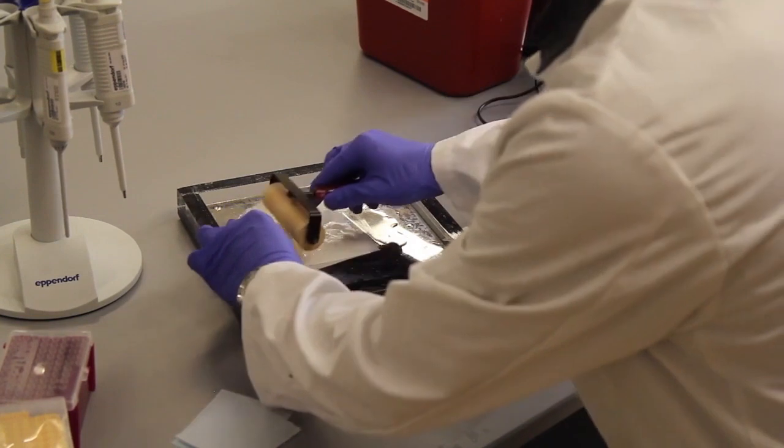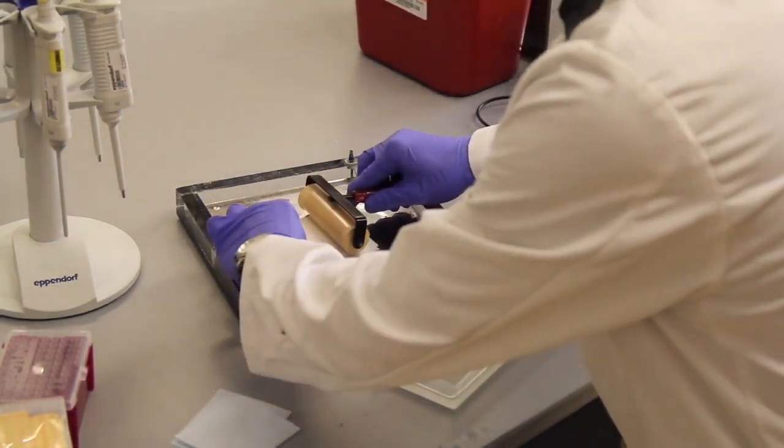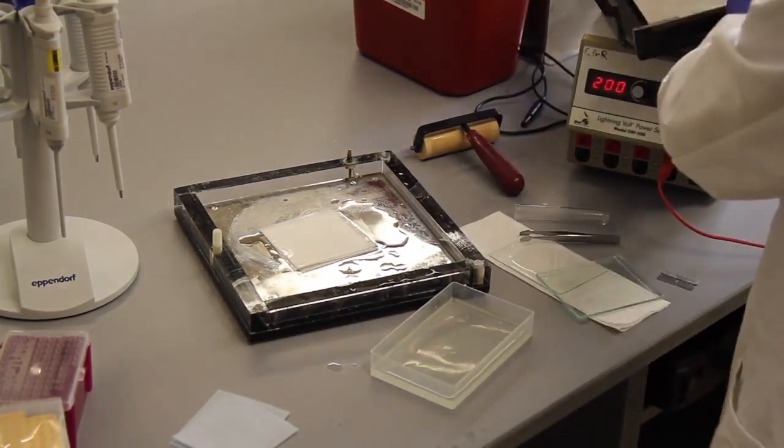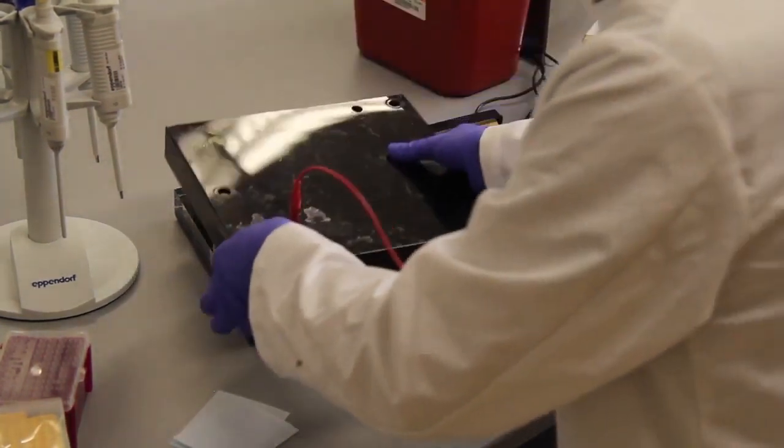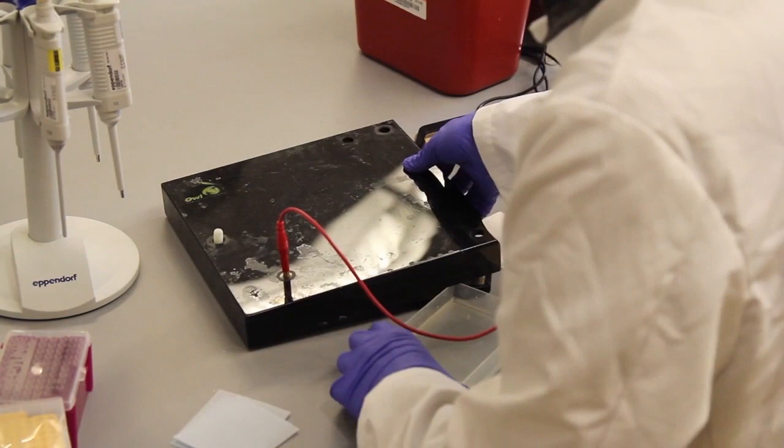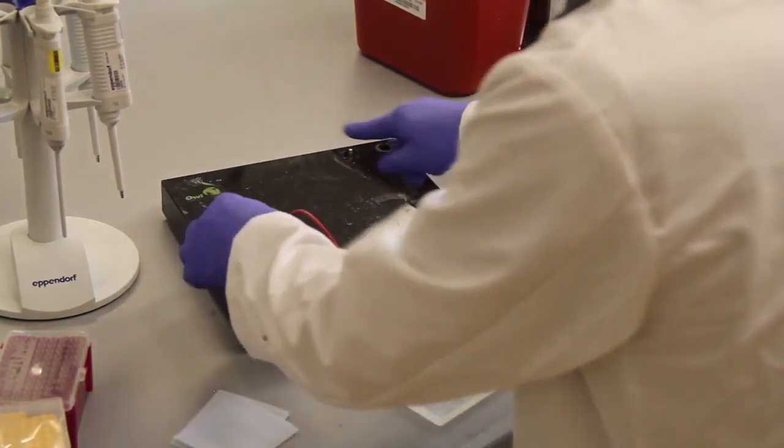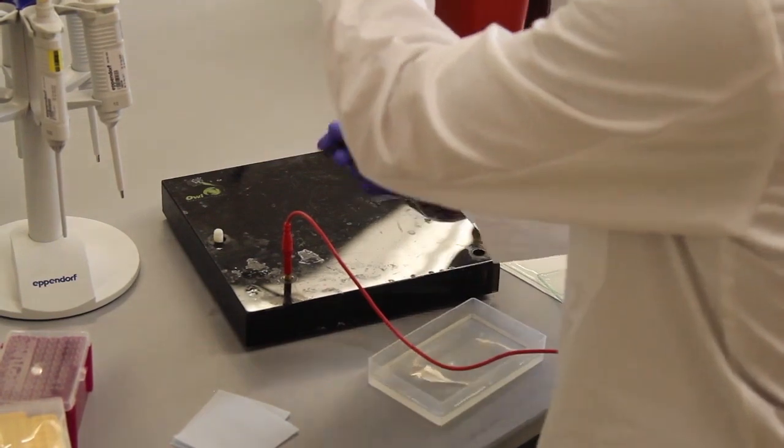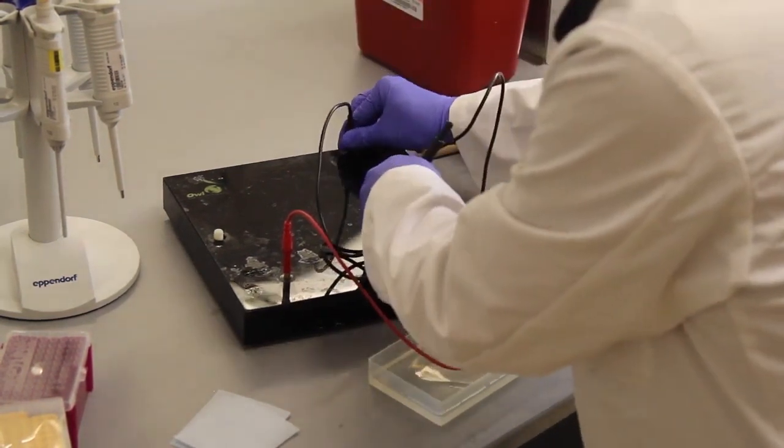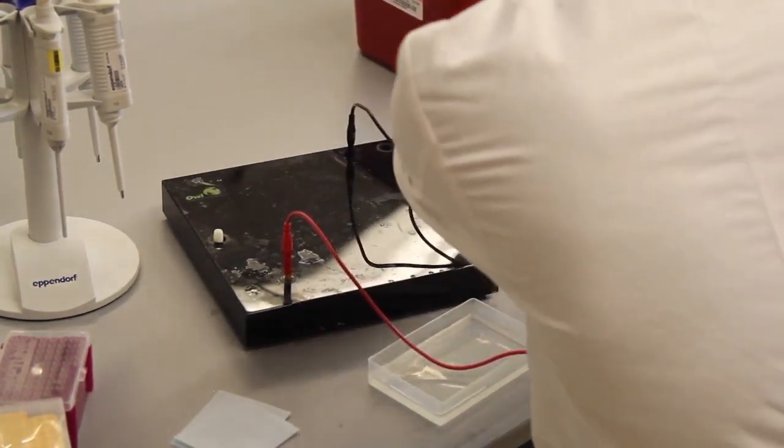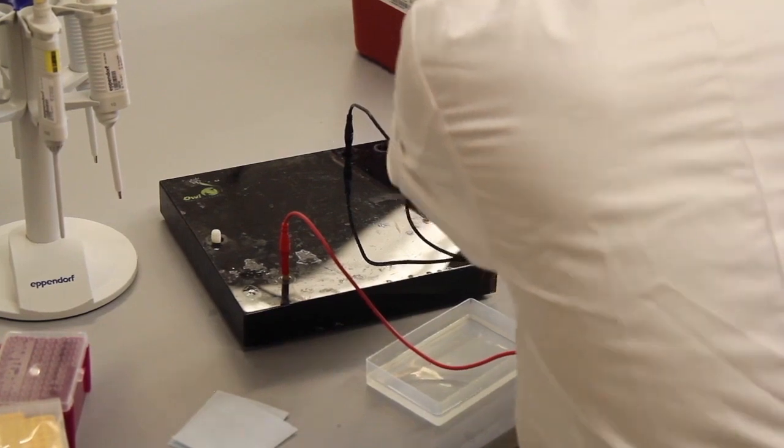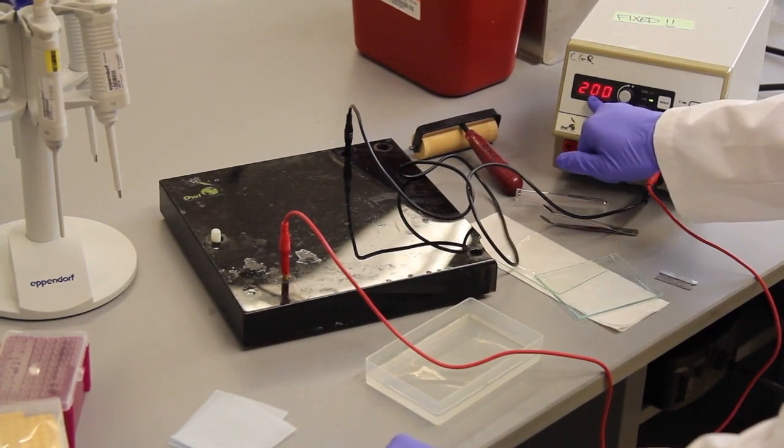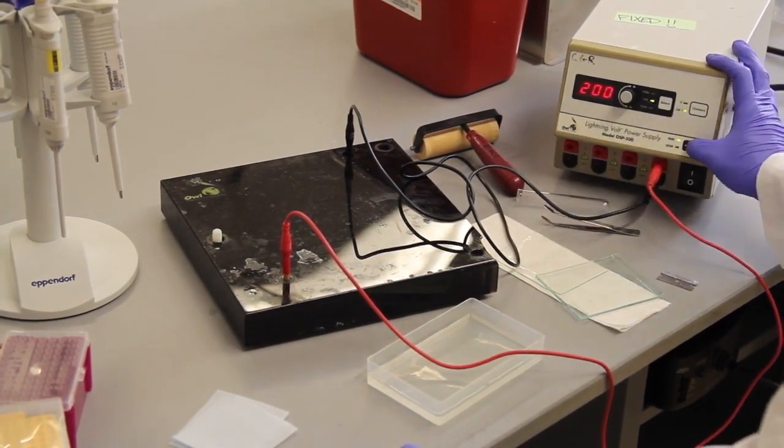Okay, now that it's all assembled, I'm going to flatten everything again to make sure all air bubbles are out. Put the lid on. The red electrode is already connected. The black one still needs to be connected. And this is going to run at a constant 200 milliamperes for about one hour.